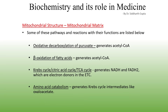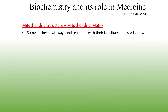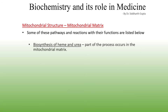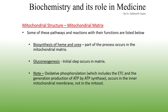Amino acid catabolism also occurs in the matrix, generating molecules like oxaloacetate that act as intermediates in the Krebs cycle. Some parts of heme and urea synthesis take place in the mitochondrial matrix, and the initial step of gluconeogenesis also occurs there. Note that oxidative phosphorylation — including the electron transport chain and ATP generation by ATP synthase — does not occur in the mitochondrial matrix; instead it happens in the inner mitochondrial membrane.